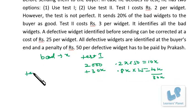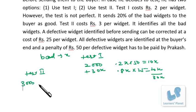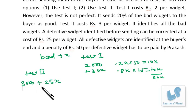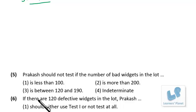For Test 2: the testing cost is 1000 × 3 = rupees 3000. Since Test 2 identifies all bad widgets, all X are corrected at rupees 25 each, costing 25X. So Test 2 total cost = 3000 + 25X. These two formulas — Test 1: 2000 + 30X and Test 2: 3000 + 25X — are key to answering all questions in this set.